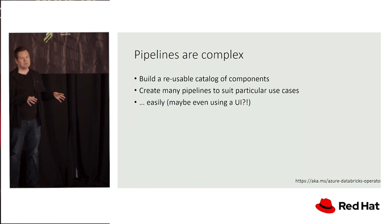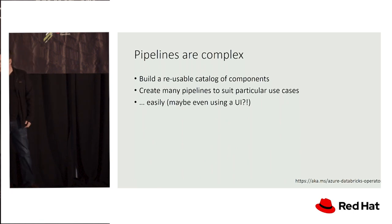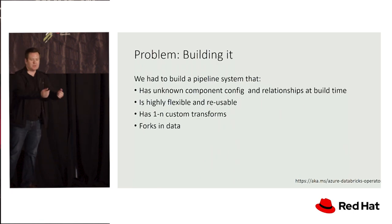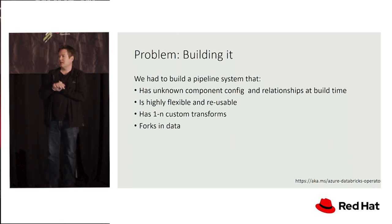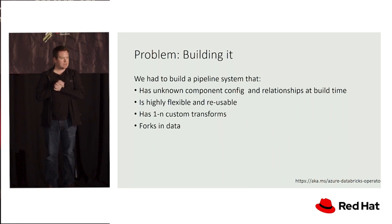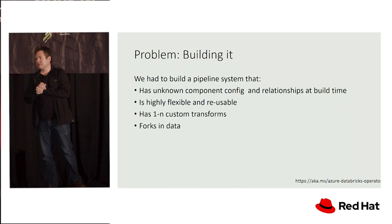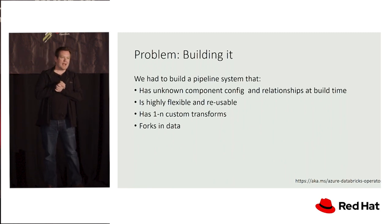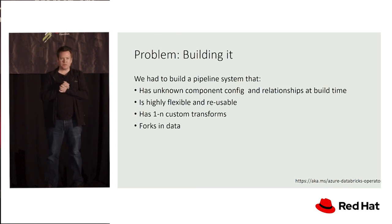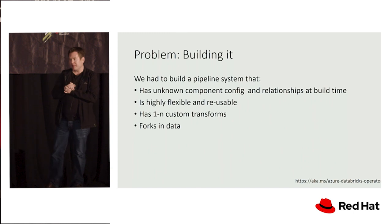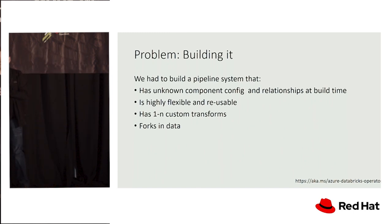So it's not just one pipeline we get to build — which would be still difficult, but we could at least hard code a lot of that stuff. We had to build a pipeline system with unknown component configurations and relationships until later on — highly flexible and reusable, with one-to-many custom transforms. There might be Spark jobs or Python scripts that run part of this pipeline, and there could be forks in the data stream, but we don't know at design time.